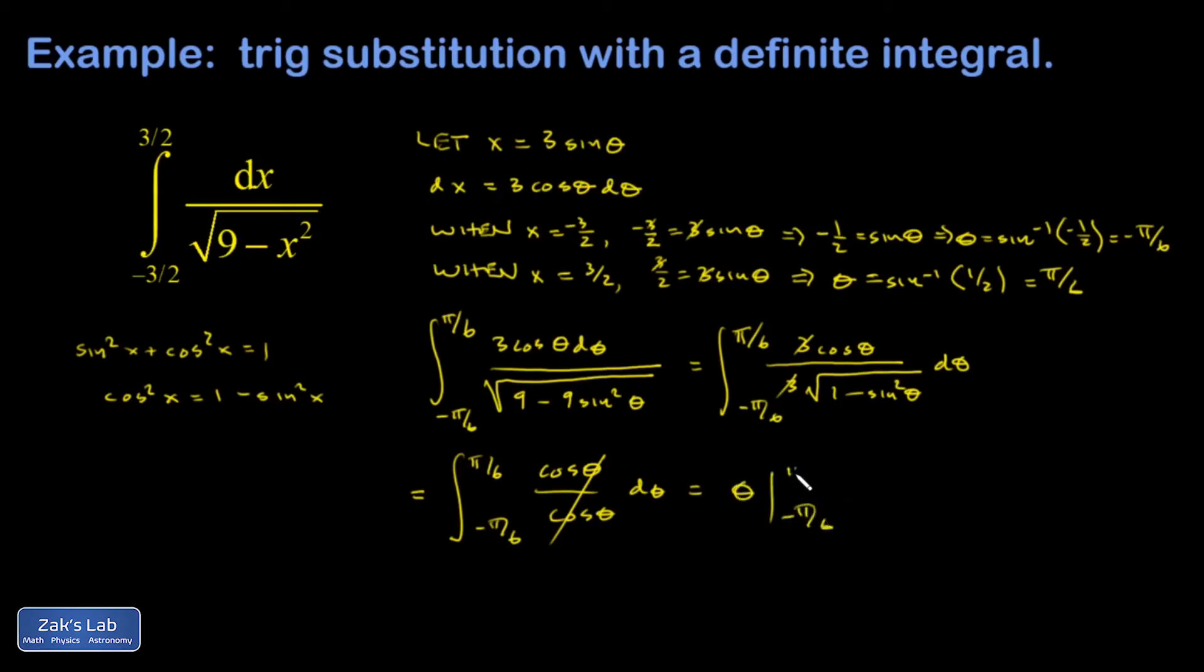From negative pi over 6 to pi over 6. When I plug in the upper limit, I get pi over 6 minus what I get when I plug in the lower limit. And that gives me 2 pi over 6, which is pi over 3.